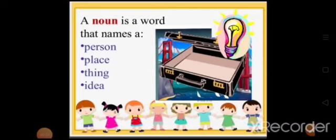A noun or naming word is the name of a person, animal, place, thing, idea or feeling. For example: Vibha is happy because she won the first prize. Mr. Gupta lives in Kanpur. He won a prize for his bravery last year. Rohan is flying a kite with his sister. Here you can see that Vibha, prize, Kanpur, bravery, Rohan, kite and sister are nouns.